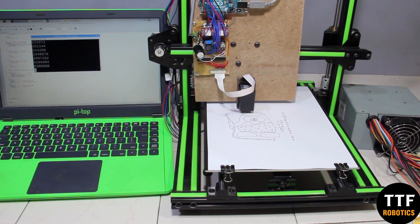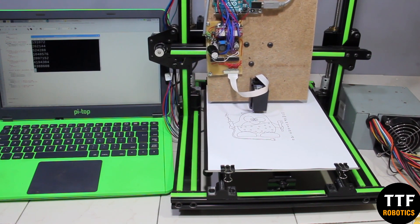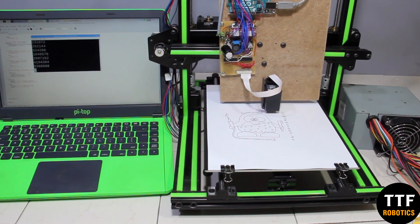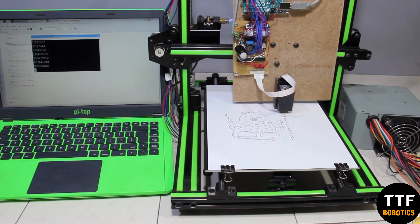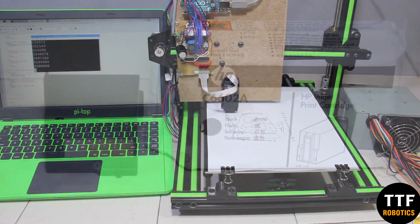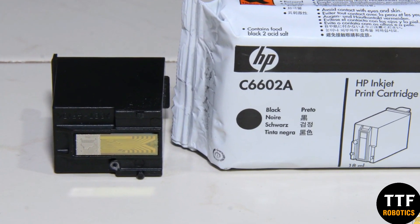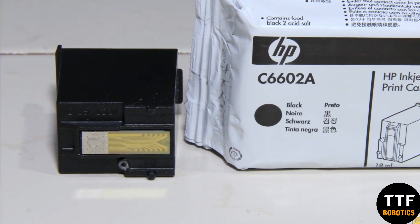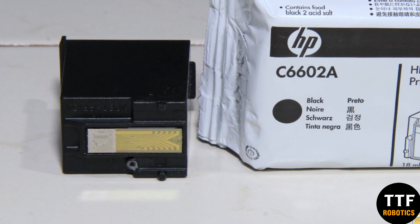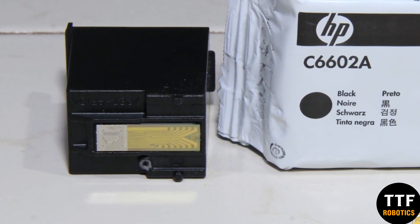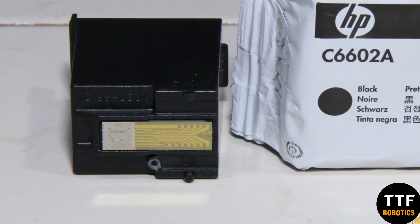The first approach to achieve this is to control a commercially available print head via an Arduino Uno. The functionality of the HP 6602 print head, a fairly old monochrome model with only 12 nozzles that work according to the bubble jet process, is well documented on the internet.